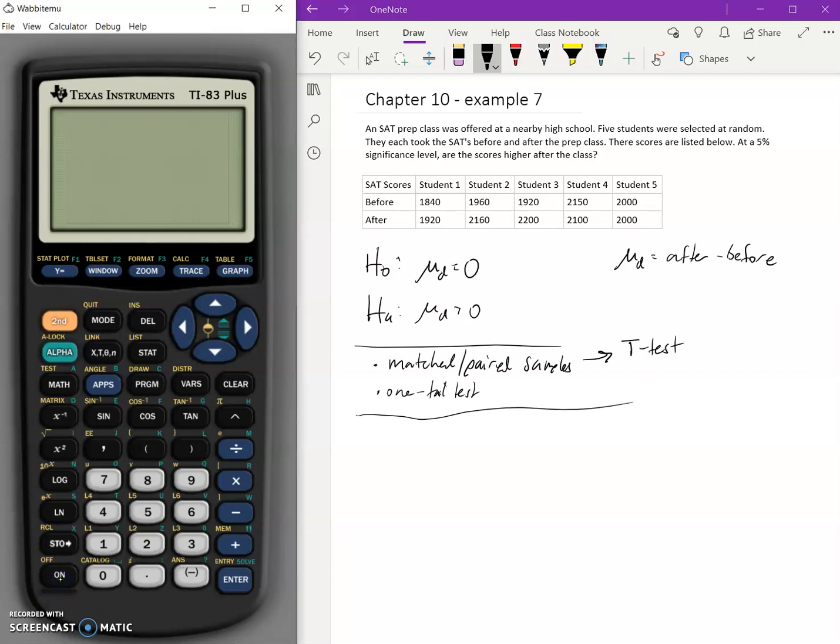If we go over to our calculator, we go to stat, go to tests, and down to t-test. We enter in things, and we realize, wait, I don't have the statistics, I need to do the data. But that requires us to enter information into our list. So we need to go back, press stat, go to edit, and enter things into L1.